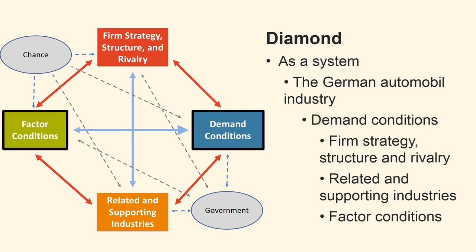We also have to see how the determinants, government and chance affect the four major determinants, and thereby the national competitive advantage. The change from petrol-driven cars to another source of energy will create discontinuities that allow shifts in competitive position. It has the potential to nullify the advantages of the firms in the German automobile industry, and creates the possibility that a new nation's car-making industry might supplant them. The government can support research in fields that help develop a German energy-efficient, CO2-neutral, high-performance car.